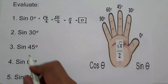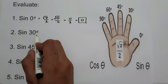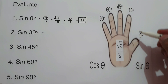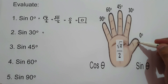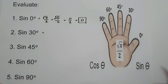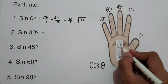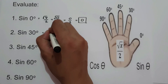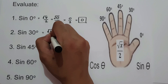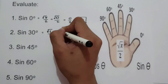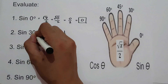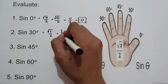For sine 30°, there is one finger between 30° and sine. That means the value of x is 1. So square root of 1 over 2, that is 1/2. Sine 30° is 1/2.